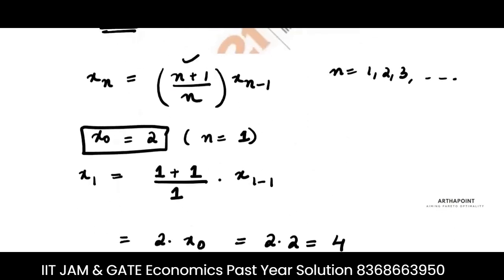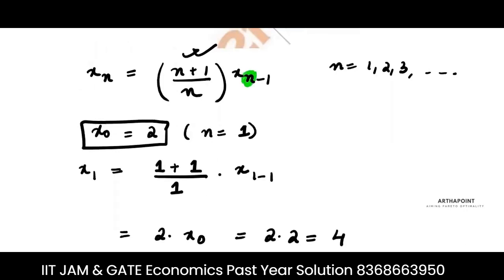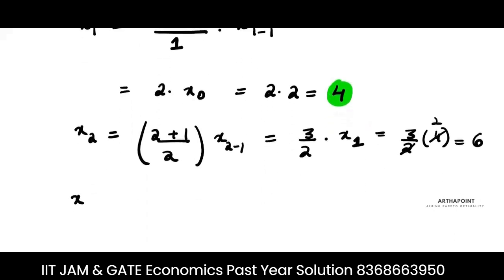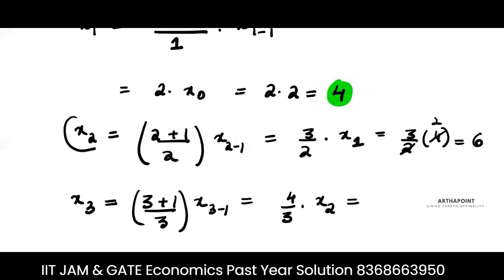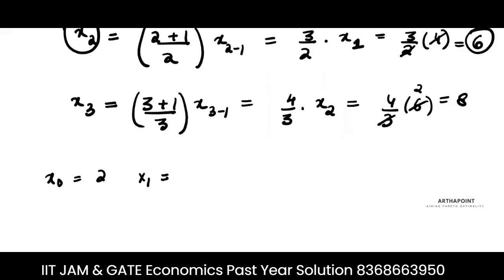To find x₂, put n = 2: (2+1)/2 · x₁ = 3/2 · x₁. Since x₁ = 4, x₂ = 3/2 × 4 = 6. For x₃, put n = 3: (4/3) · x₂ = 4/3 × 6 = 8. So the pattern is: x₀ = 2, x₁ = 4, x₂ = 6, x₃ = 8, and so on.